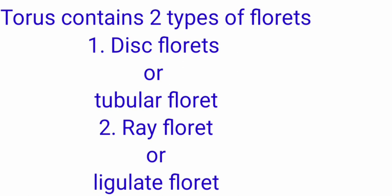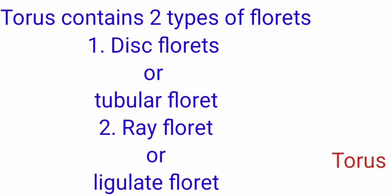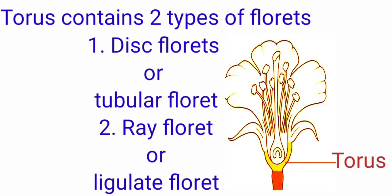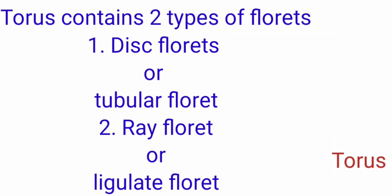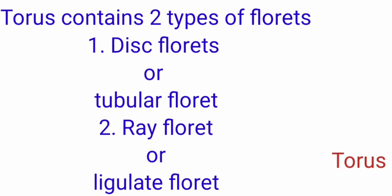Torus. Torus is the portion which holds the gynoecium that is the female part of the reproductive system which present in the flower. The torus contains two types of florets. First one is disc florets. It may be also called as tubular florets. Next one is the ray florets. It also called as ligulate florets.